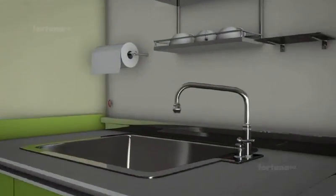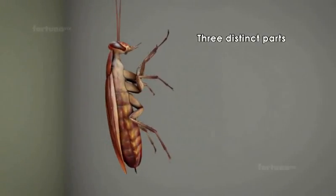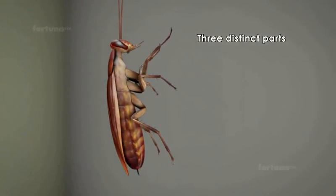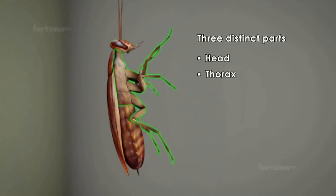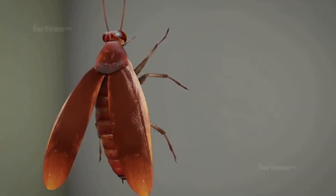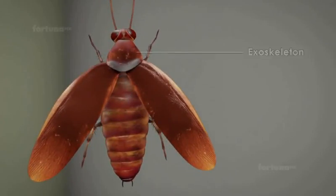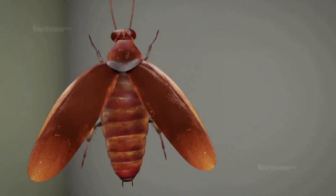Let's look at the cockroach as an example of an invertebrate. Their body shows three distinct parts: a head, thorax, and abdomen. There is a thick hard cutaneous layer that covers the body as an exoskeleton.